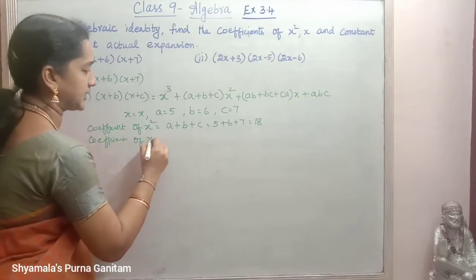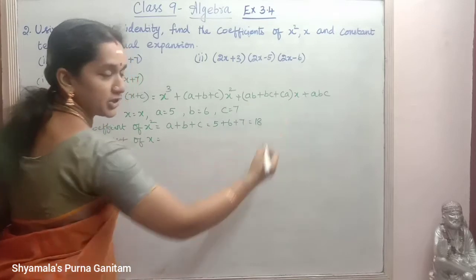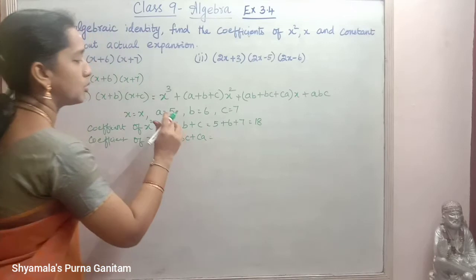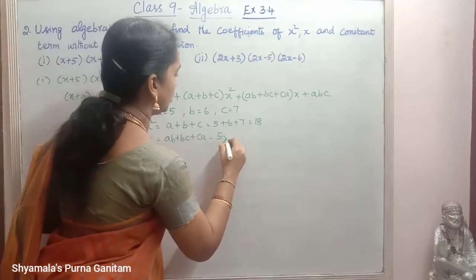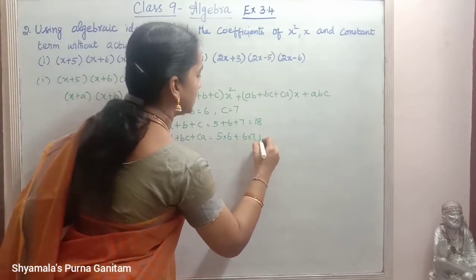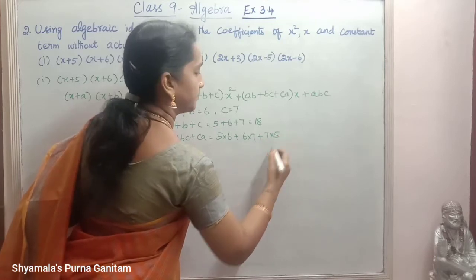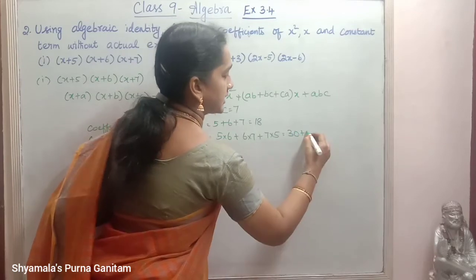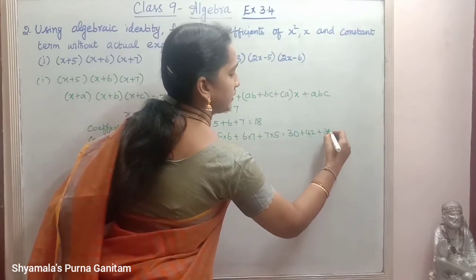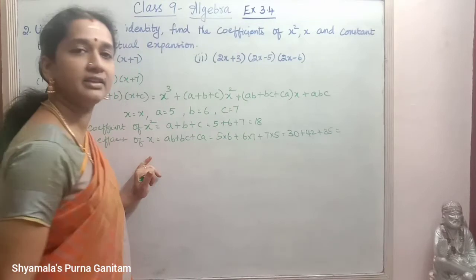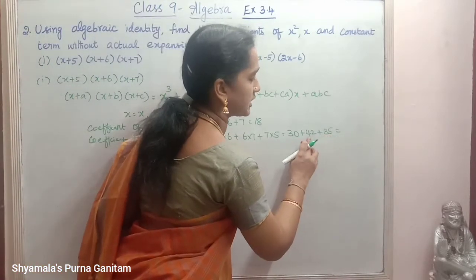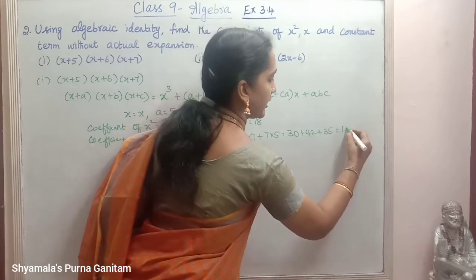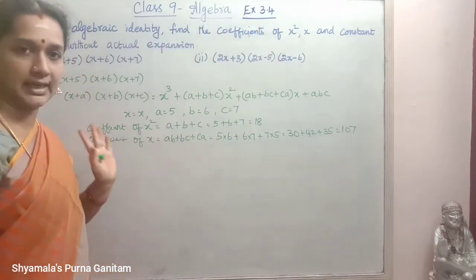Coefficient of x is ab+bc+ca. So a×b plus b×c plus c×a: 5×6 is 30, 6×7 is 42, 7×5 is 35. When we add 30 plus 42 plus 35 we get 107. This is the coefficient of x.